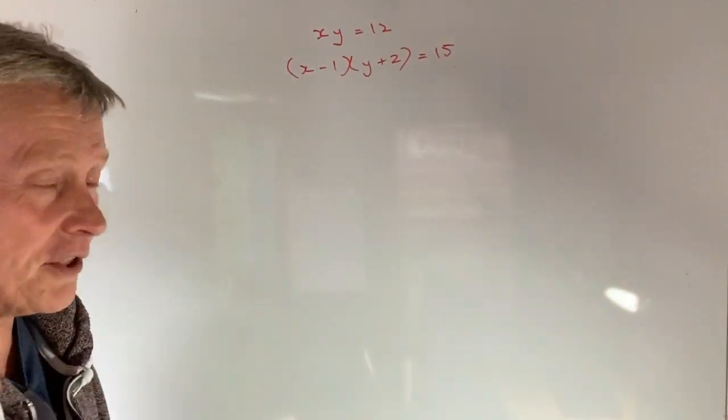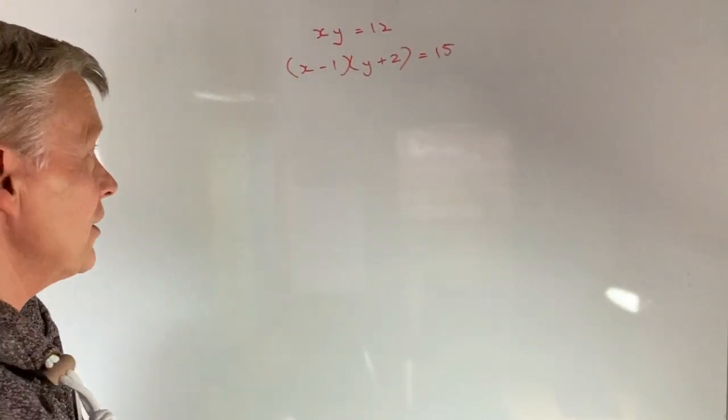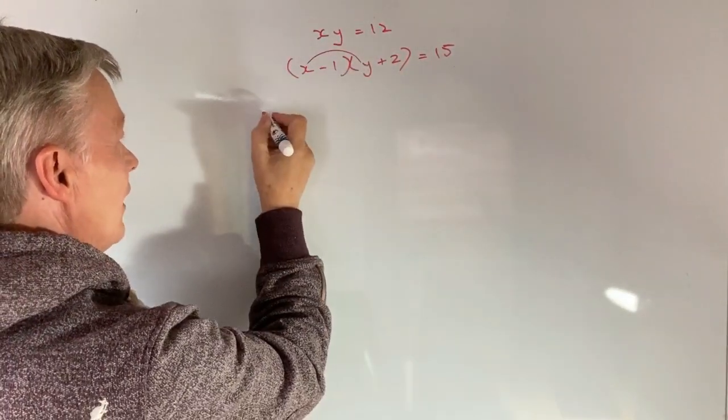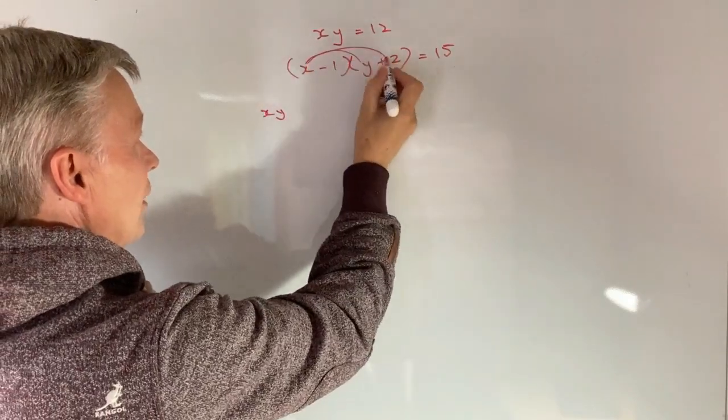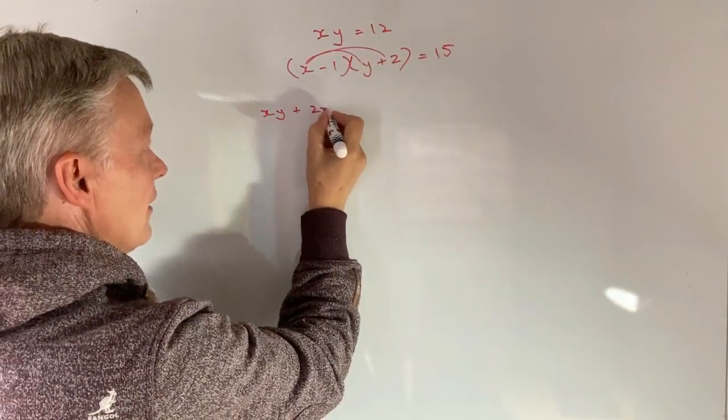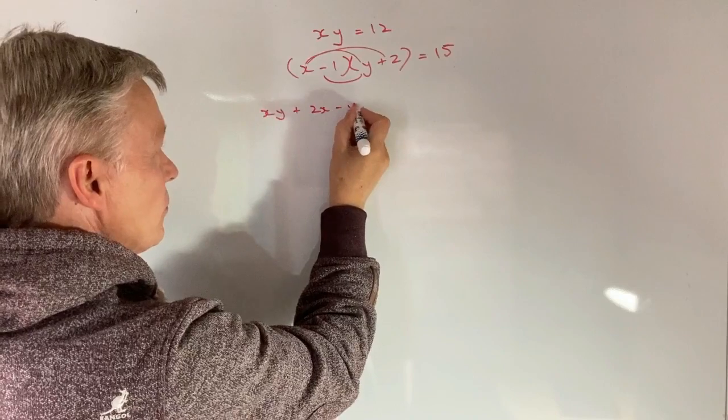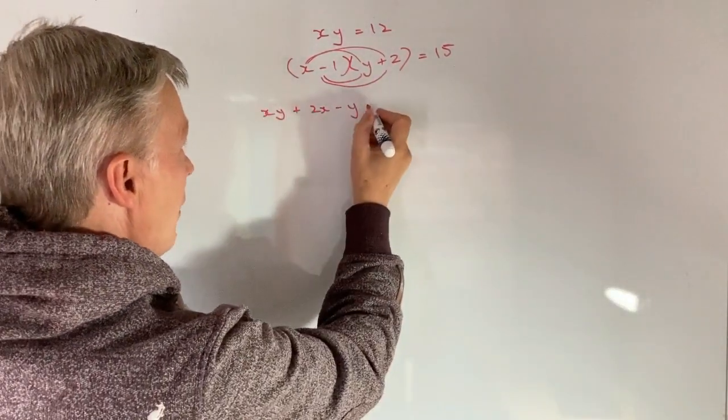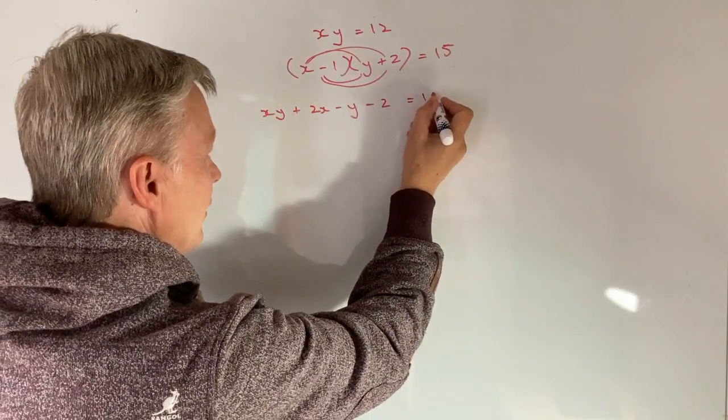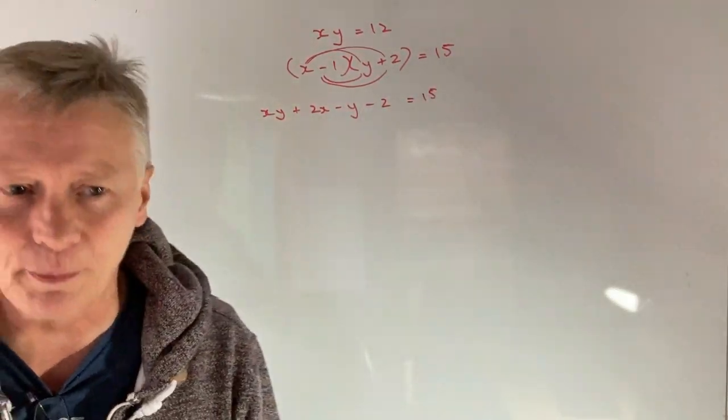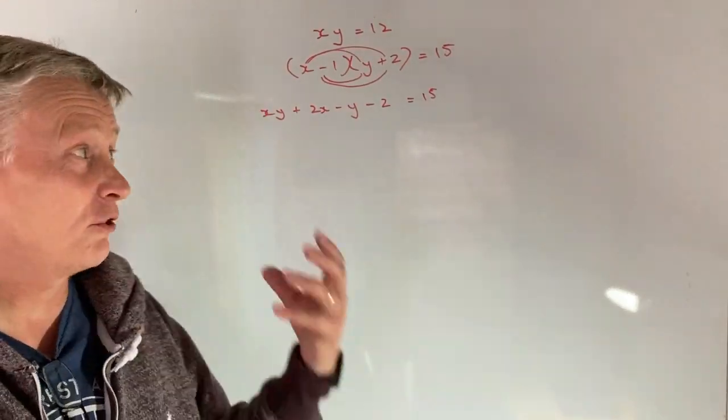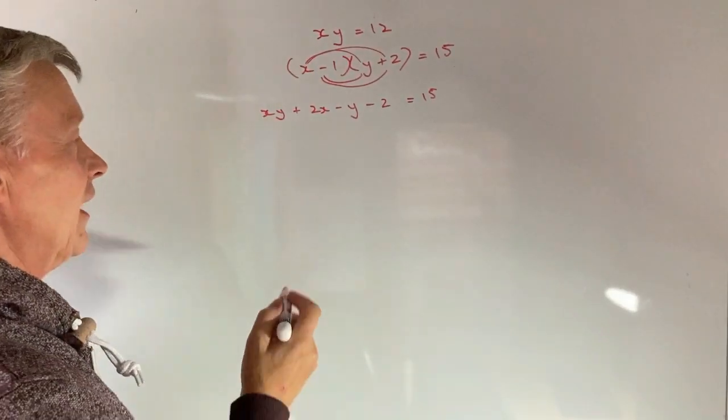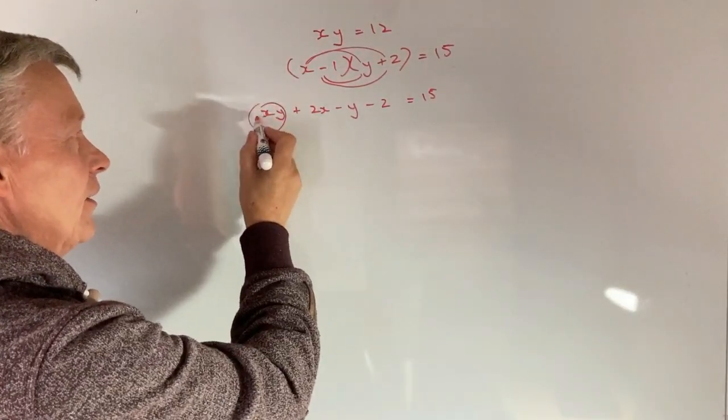So let's first of all just multiply out the second expression or second equation. So I've got x times y is xy and then I've got plus 2x minus y and then I've got minus 1 times plus 2 is going to be minus 2 and that all equals 15. So it looks a little bit scary.